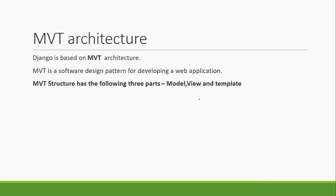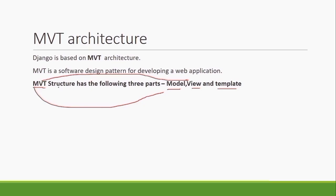Now, MVT architecture. As I mentioned, it is one of the most frequently asked interview questions. If the MVT architecture is clear to you, you will be able to understand applications very easily — how the flow is happening between different files. Django is based on MVT architecture, while most other frameworks are based on MVC. MVT architecture has three parts: Model, View, and Template — M stands for Model, V stands for View, and T stands for Template.